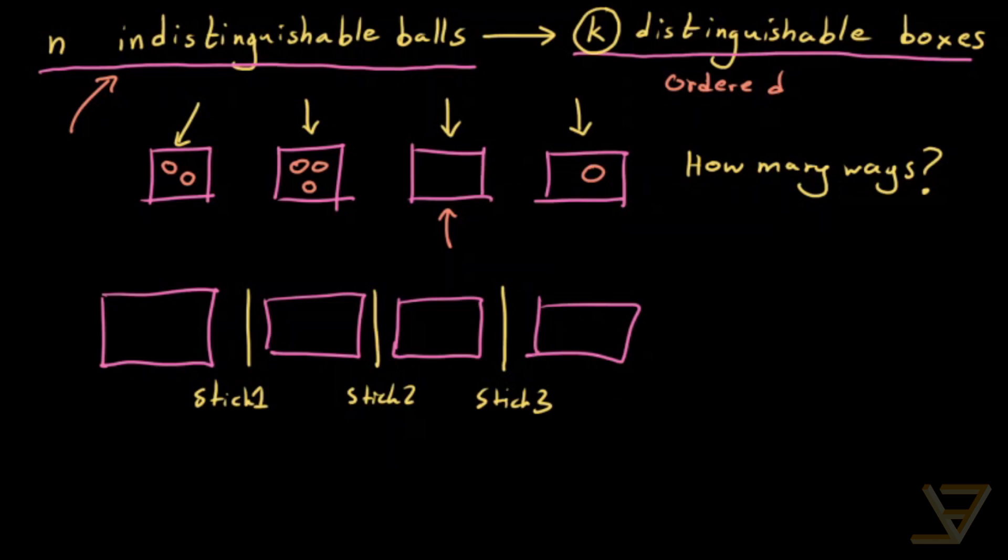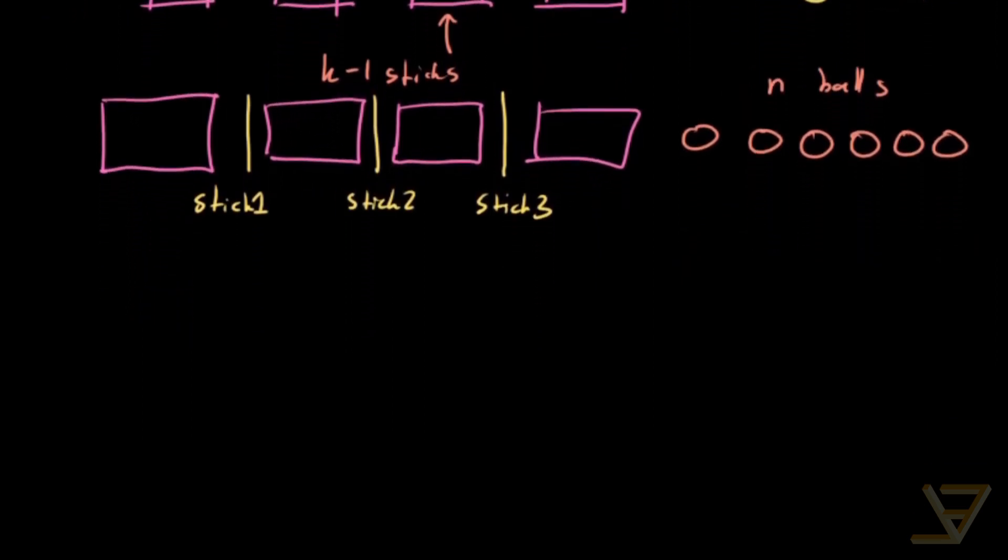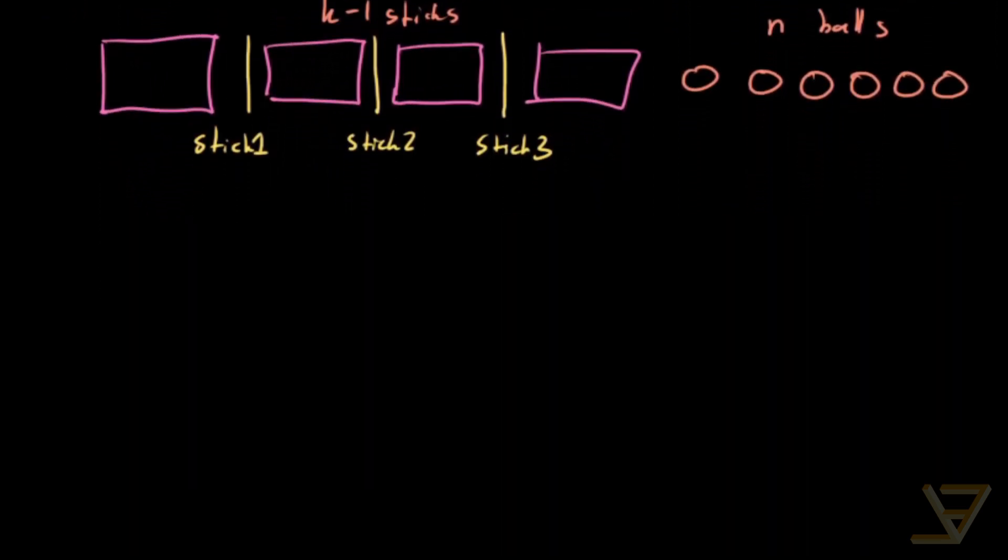Next, in addition to the K minus one sticks, we append to the sequence N balls. So 1, 2, 3, 4, 5...N balls. The clever part is that we just need to permute these K minus one sticks and N balls.